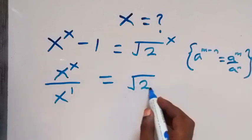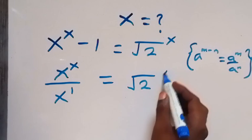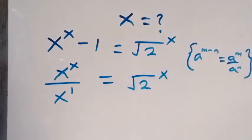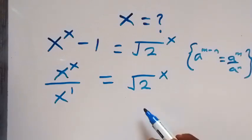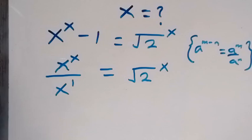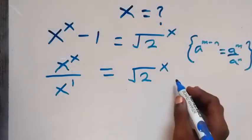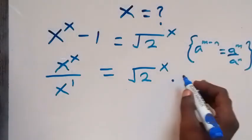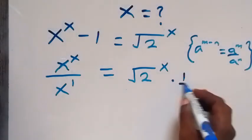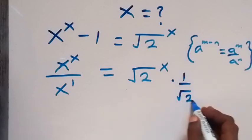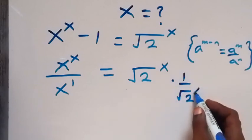This now equals square root of 2 raised to power x. Next, let's remove this square root of 2 raised to power x on this side — that is, we multiply by 1 over root 2 raised to power x.